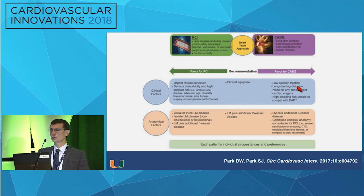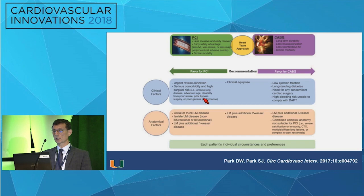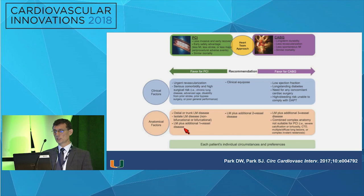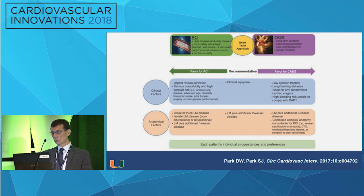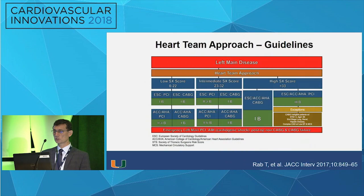This is a nice illustration of how the heart team discussion should go - what favors PCI versus what favors CABG. High surgical risk, serious comorbidities, or a surgeon who declines may favor PCI. Low ejection fraction, diabetes, and need for concomitant cardiac surgery favor CABG. If anatomical factors are favorable for PCI - like ostial or shaft disease or isolated left main - that's okay. If there's extensive CAD in the higher tertile of the syntax score, we may favor CABG. We also have to consider patient preferences.